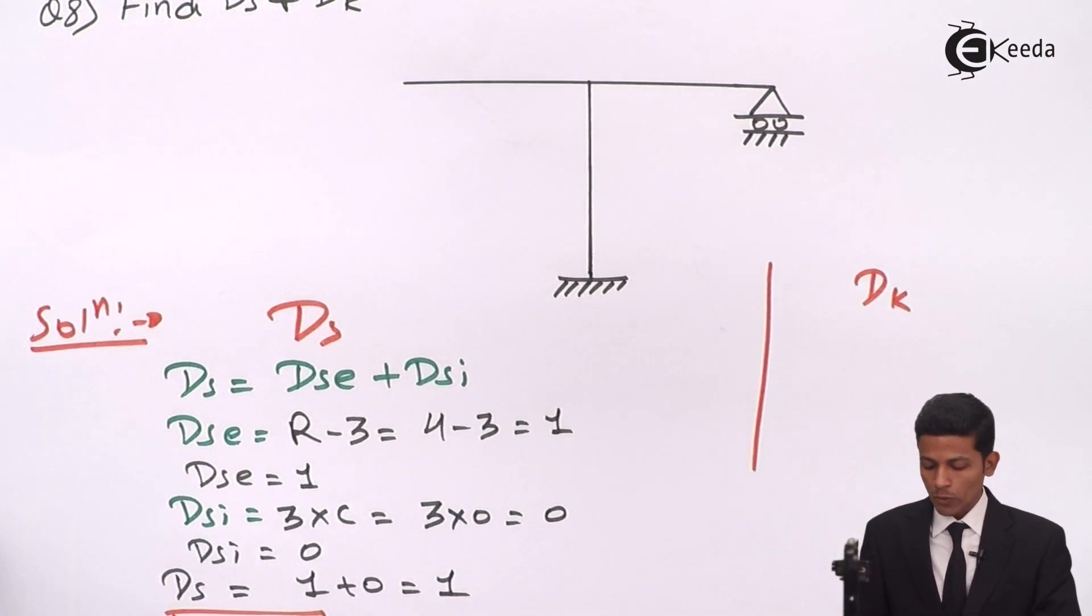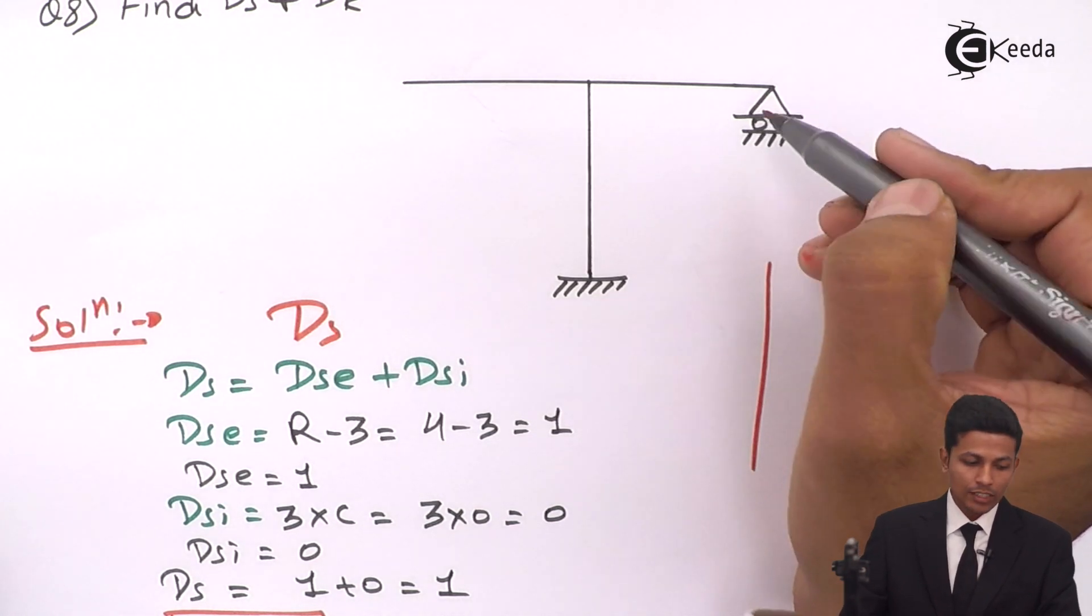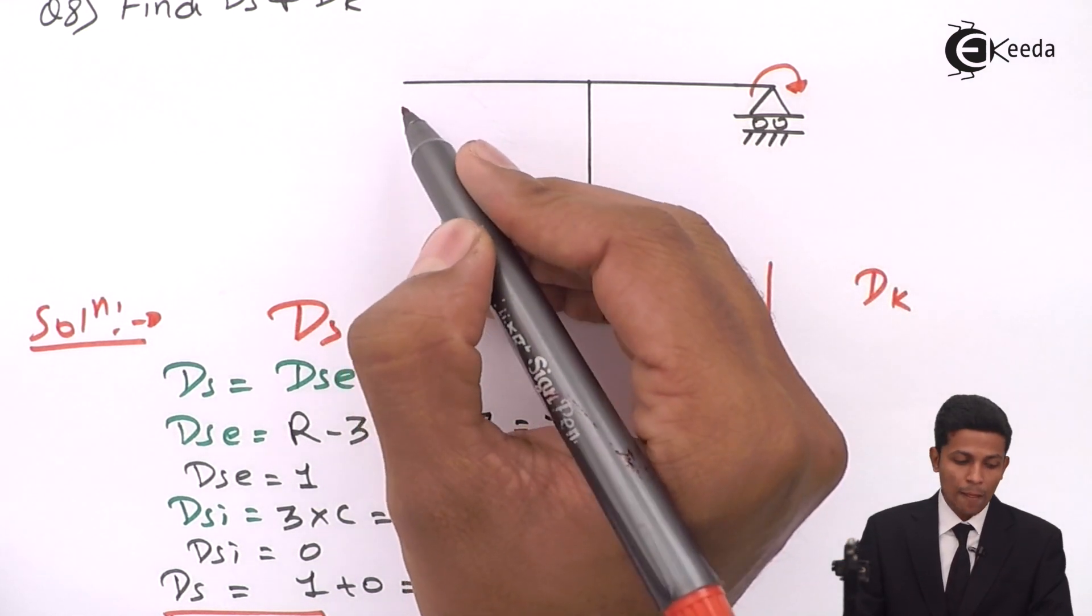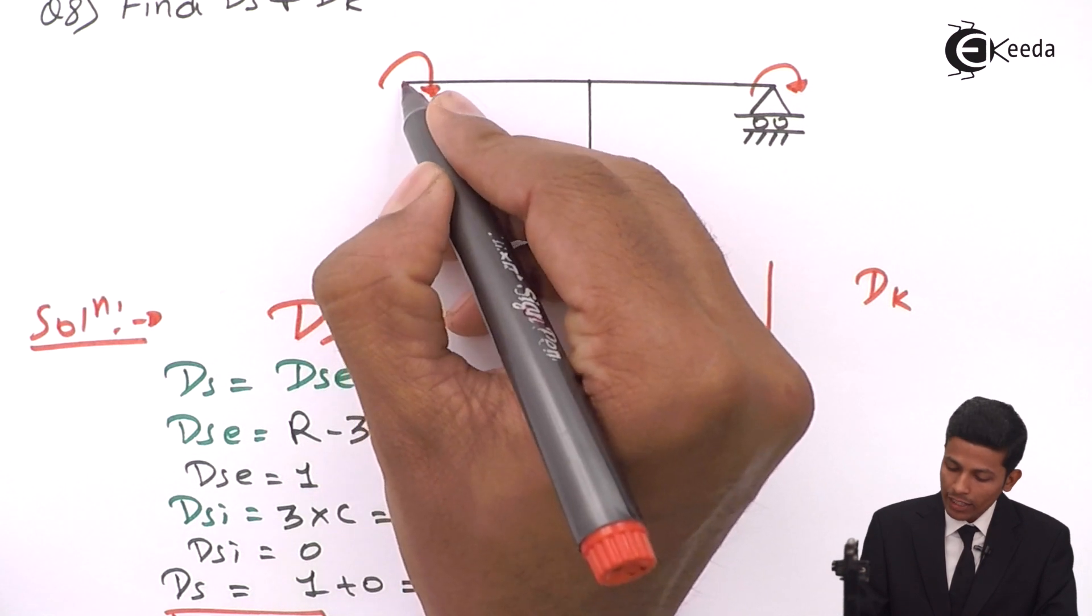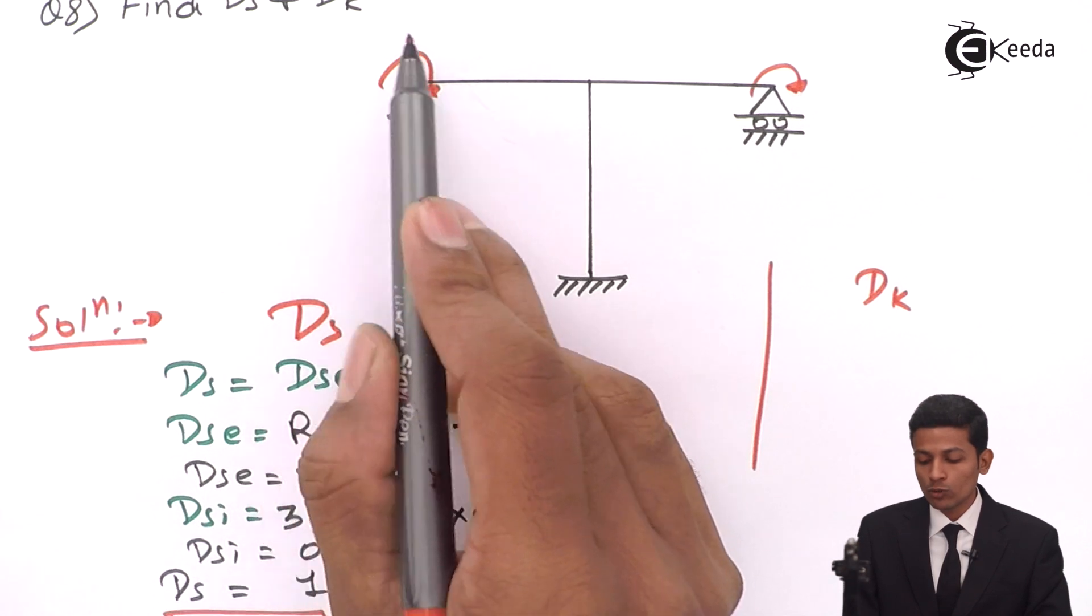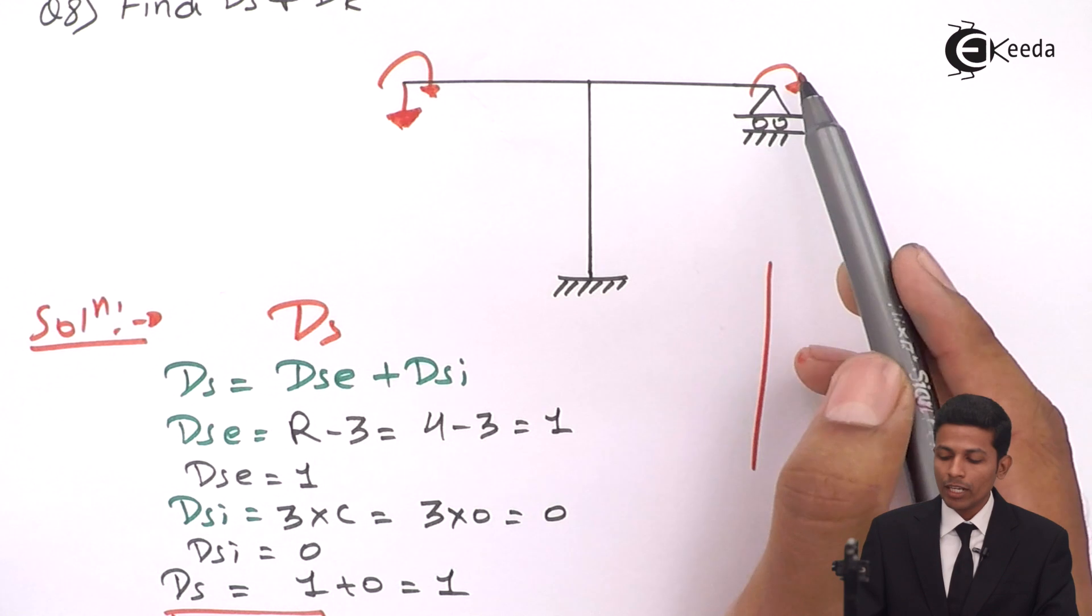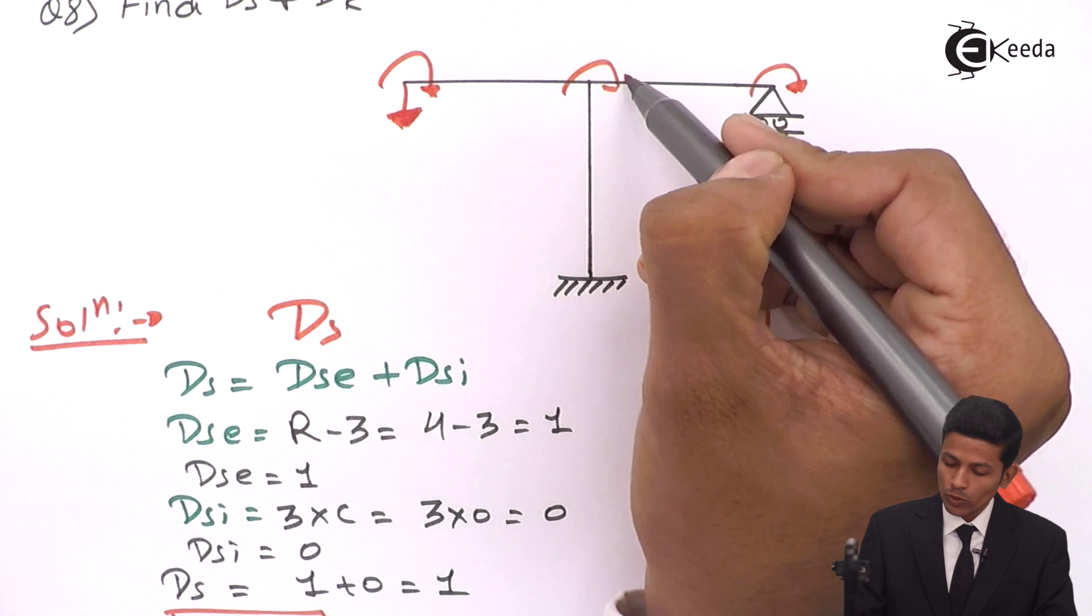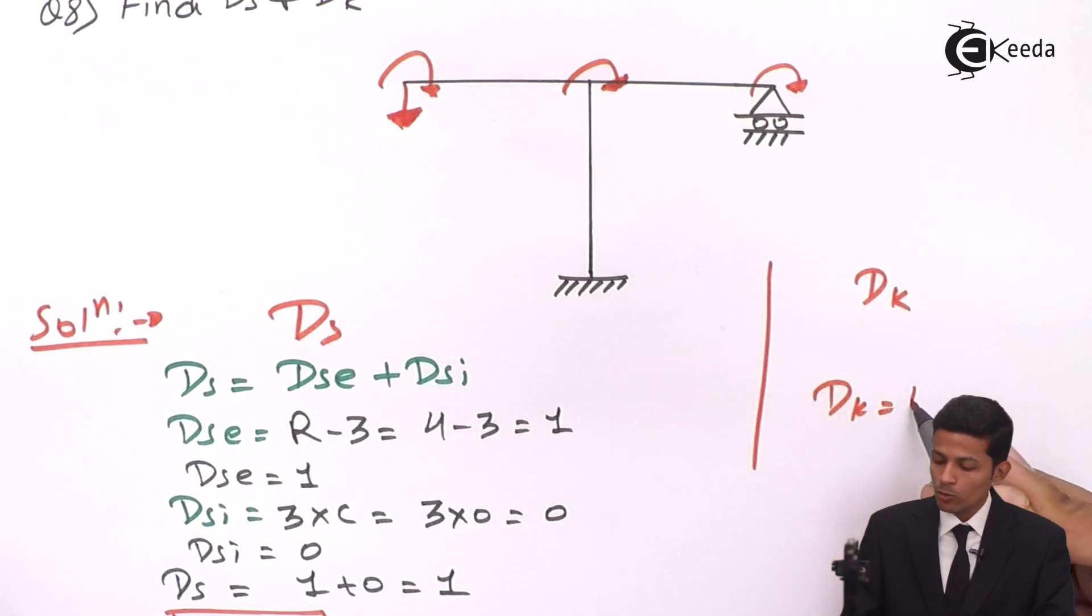Now let's move on to Dk. See, this is a roller support. It will come on this side. Now this is a fixed one. This also comes one rotation over here, and here also comes one over here as it is a free end. In a free end we have to draw two couples: this is one rotation and this is one load, okay, one force. Now how many Dk will become? 1, 2, and 3, and this is also one couple over here. 1, 2, 3, and 4. Your Dk will be 4.